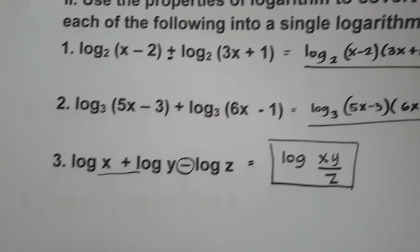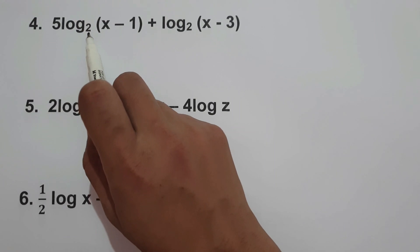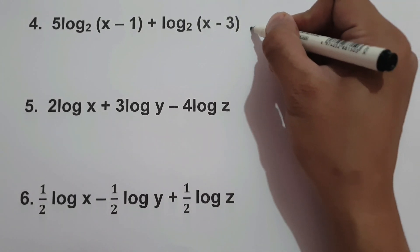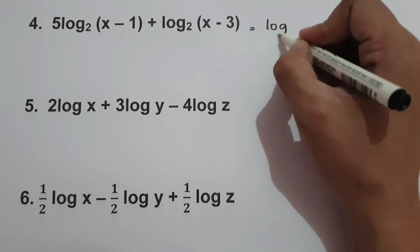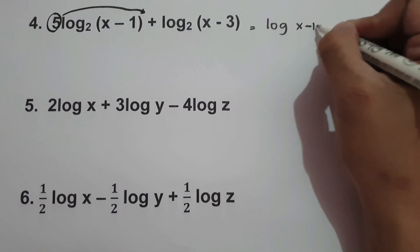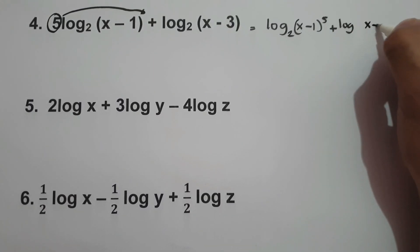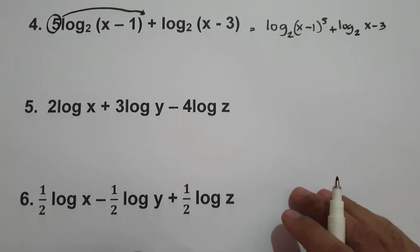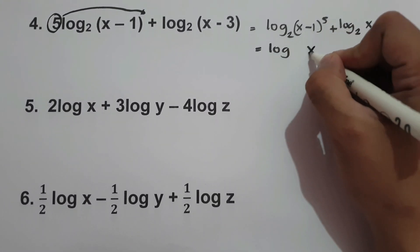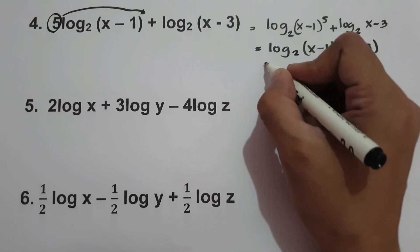Let's try a more complex example. Number four: 5 log base 2 of (x−1) plus log base 2 of (x−3). We move the coefficient 5 into the exponent, giving log base 2 of (x−1)⁵ times (x−3). So this will be our final answer.